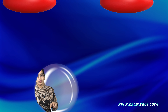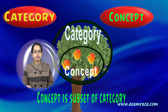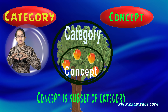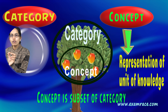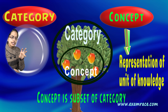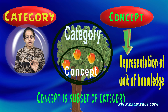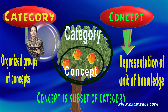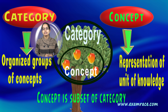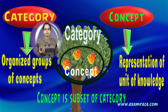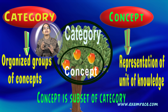So what are a category and a concept? A concept is a subset of the category, and concept is a representation of a unit of knowledge with mental categories, mental objects, or events associated to it. Category, on the other hand, is an organized group of concepts, where you have similarities among other concepts that could be seen under a category.